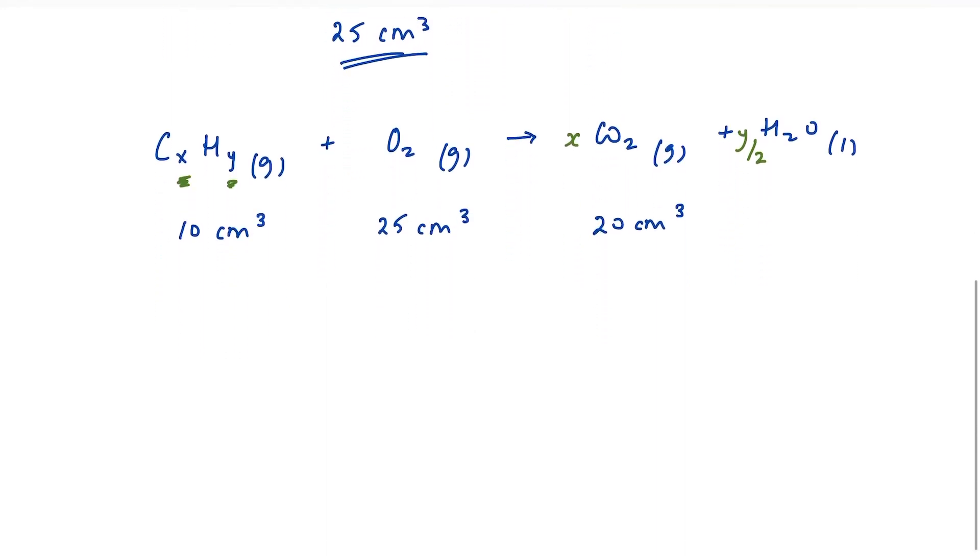I could turn this into moles. The way to find the number of moles of gas is to divide the volume by the molar volume. So the molar volume in this case would be 24 decimetres cubed or 24,000 centimetres cubed. But actually, it's far simpler just to work in terms of gas ratios. I end up in exactly the same place. So my ratio is 10 to 25 to 20, which is 1 to 2.5 to 2.